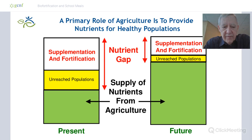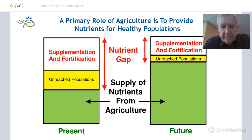This simple diagram shows that if the rectangle on the left represents the total mineral and vitamin requirements for the total population in developing countries, the green shaded area is the part provided by the food supply — and it isn't coming close to providing enough minerals and vitamins. The nutrition community has come in with supplementation and fortification to try to close the gap, but some people still aren't reached by either.